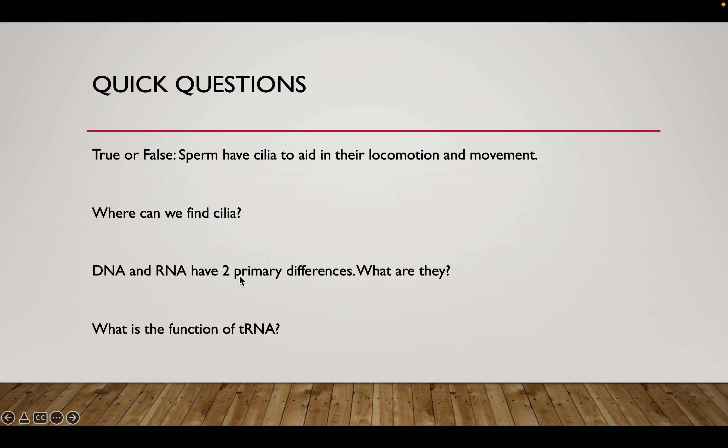DNA and RNA have two primary differences. What are these? Well, one, there are probably more than two, but we'll just talk about two. There is the difference in nitrogenous base. So DNA has thymine, RNA has uracil. And then there is a difference in sugar as well. DNA has deoxyribose, RNA has ribose.